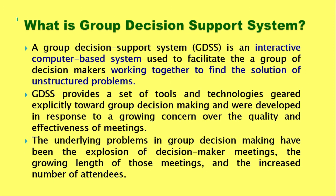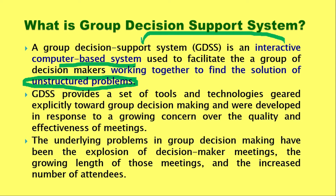The formal definition: a Group Decision Support System is an interactive computer-based system used to facilitate a group of decision makers working together to find solutions to unstructured problems — because decision support systems are usually needed for unstructured problems. GDSS provides a set of tools and technologies that support group decision making, especially for unstructured problems within the organization.